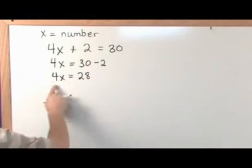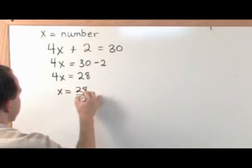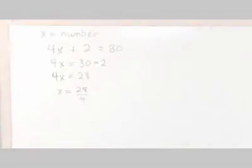And then to solve for x, you divide both sides by four. So x is going to be equal to 28 divided by four. So on the left, 4x divided by four gives you one. So that's why you have the one.